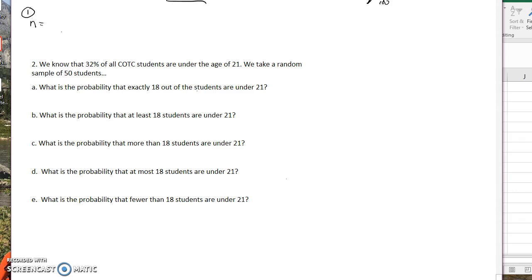First, let's find what n is. Well, it says we have 50 students, so that's n. Now p would be, what is the probability of selecting a student who is under the age of 21? That's 0.32.